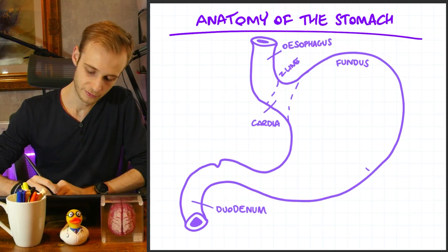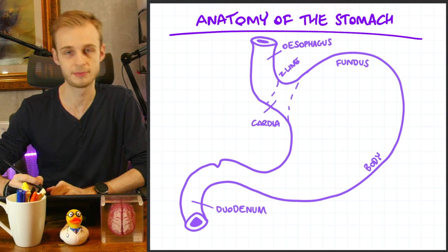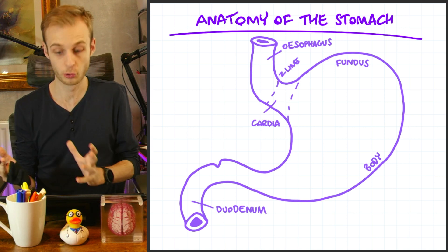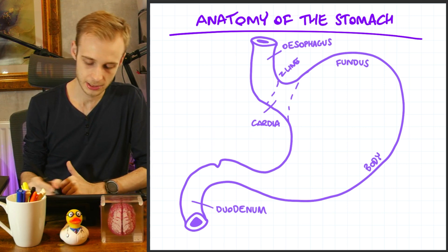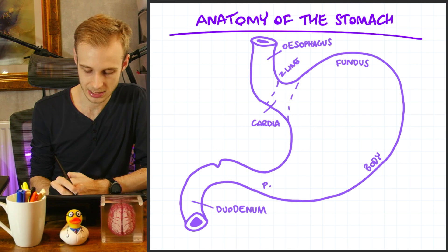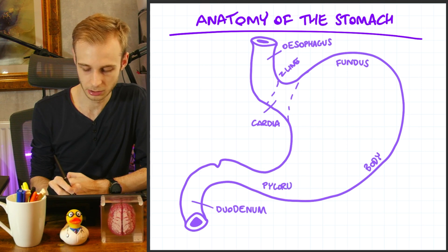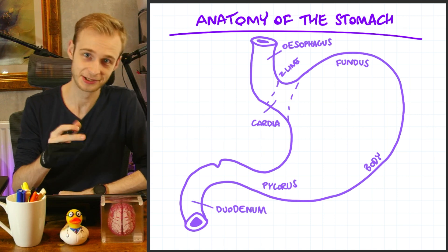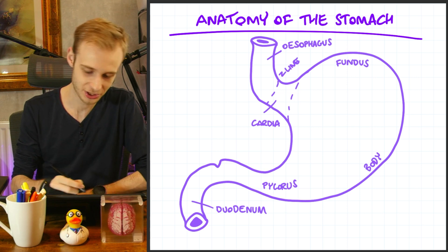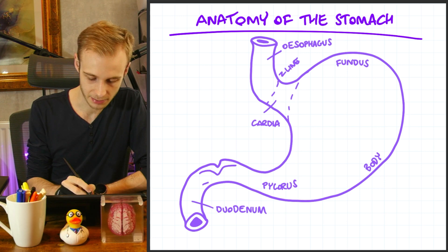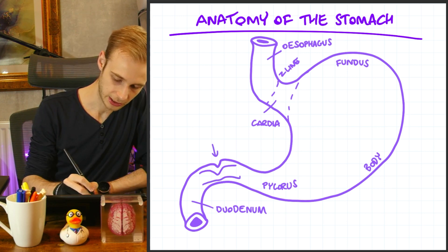The next named region is the body or corpus, depending on your preferred terminology. This is essentially the vast majority of the stomach. As we approach the bottom region, this is called the pylorus — interestingly, the ancient Greek word for gatekeeper. This tells us what structure is located here: the pyloric sphincter, which I'm labeling now.